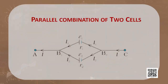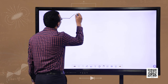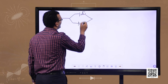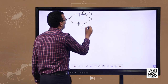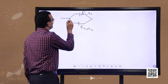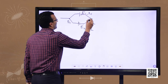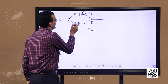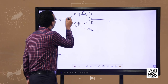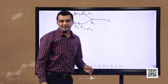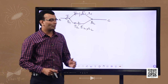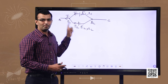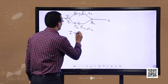Let us have two cells connected in parallel. The EMFs of the cells are E1 and E2 respectively, and their internal resistances are R1 and R2. The two cells are connected between the points B1 and B2. Let the current drawn from the first cell be I1 and the current drawn from the second cell be I2, and let the total current be I. Since current is due to the flow of electric charges and electric charges are conserved, the charge reaching terminal B1 from currents I1 and I2 will also be leaving junction B1. Hence, I equals I1 plus I2. Let us number this as equation 1.